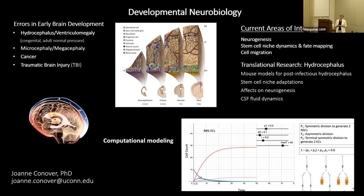The only way it will open is if you destroy the ependymal lining, and then you get a glial scar, which is much more plastic than the ependymal lining. So my thinking is that it doesn't come from the outside in, unless it has to do with the choroid plexus overproduction — but in aging there's actually decreased production of CSF.